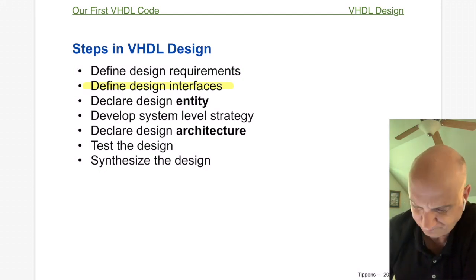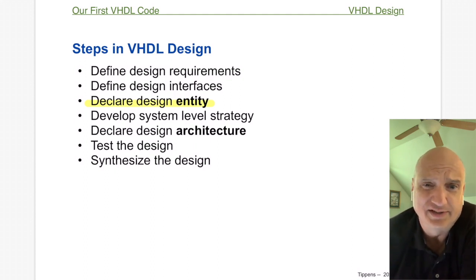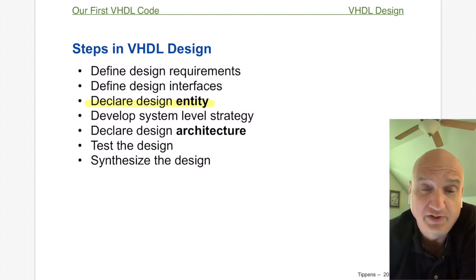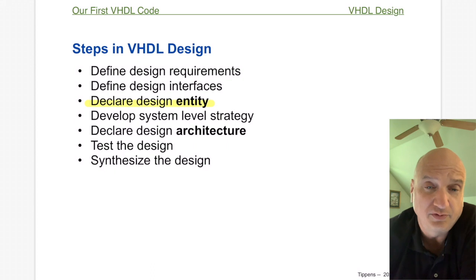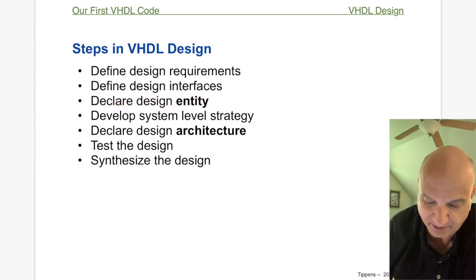The next step is to declare a design entity. The entity is basically a description of the inputs and outputs — it doesn't describe the functionality at all, it just describes the box and what the input and output pins are and their names. That entity description is part of the VHDL language, so if you're describing a component in VHDL you have to provide an entity description which describes the inputs and outputs of that component.